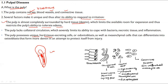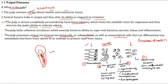The pulp possesses unique hard-tissue-secreting cells called odontoblasts, as well as mesenchymal cells that differentiate into osteoblasts, helping in the formation of more dental tissue. The different kinds of cells in pulp include odontoblasts, cell-free zone, cell-rich zone, and central core. The cell-free zone is not empty — it contains nerves that help with sensations. The cell-rich zone has fibroblasts and undifferentiated mesenchymal cells, and the central core also has fibroblasts and undifferentiated mesenchymal cells.